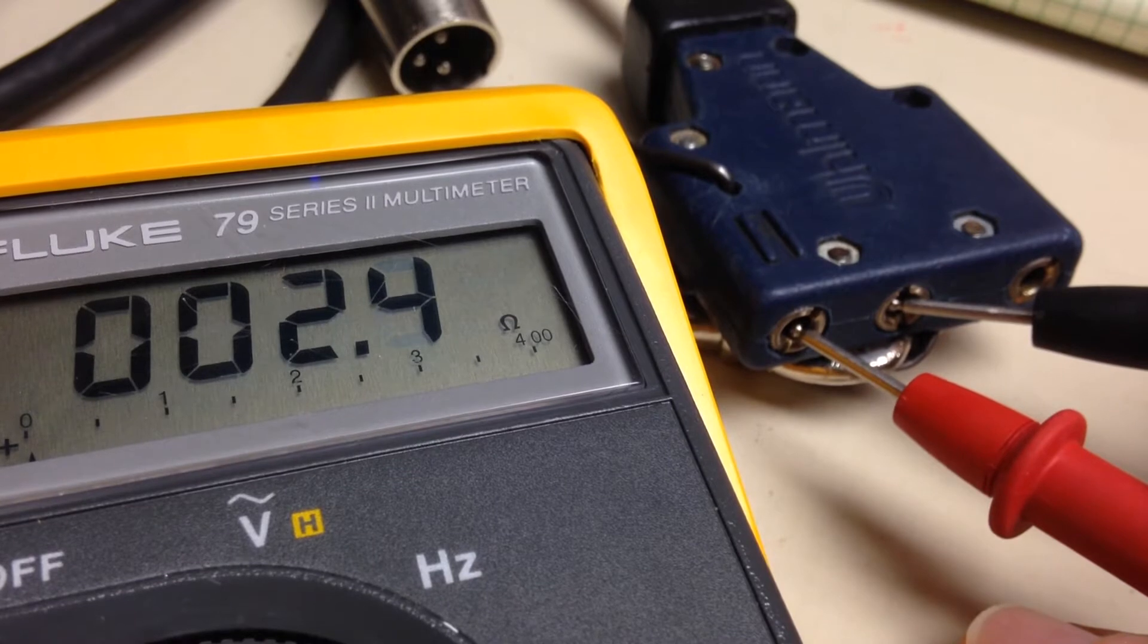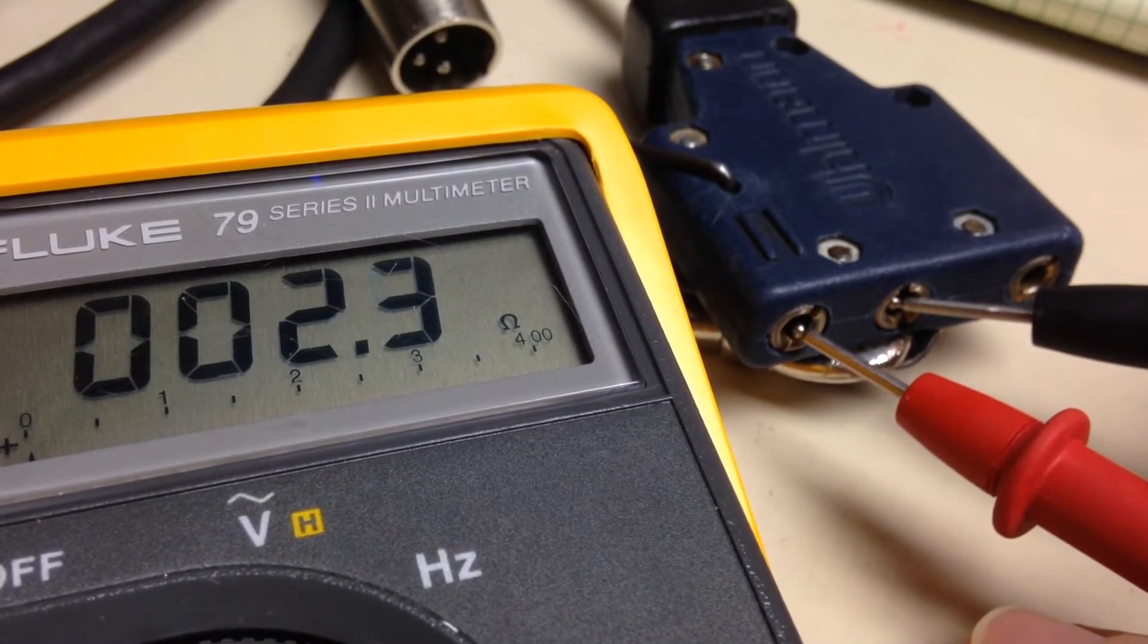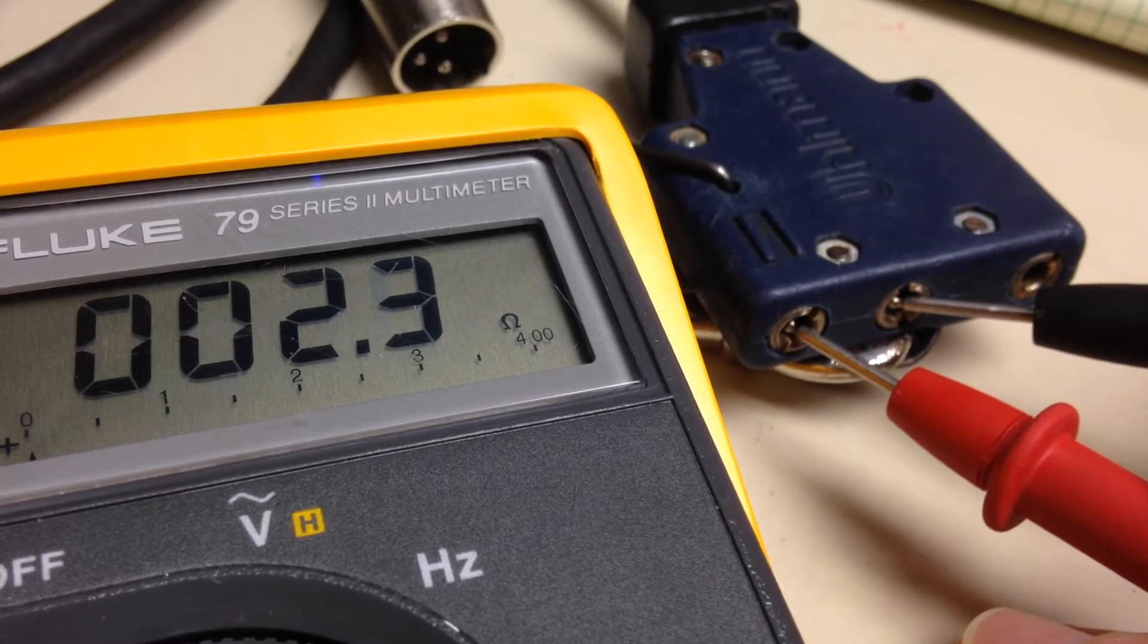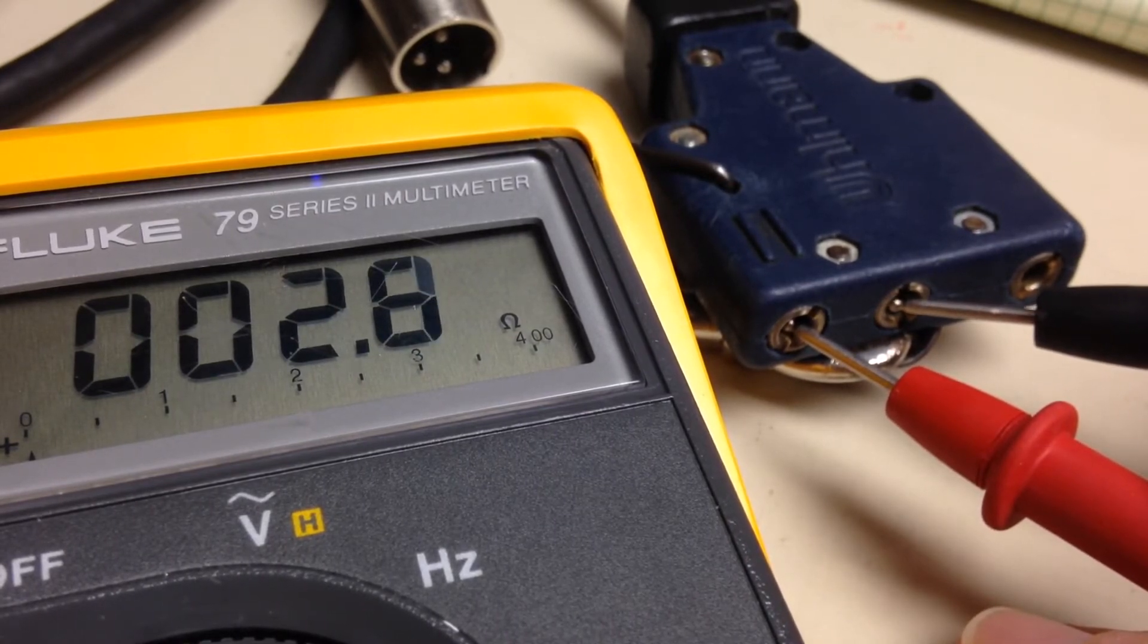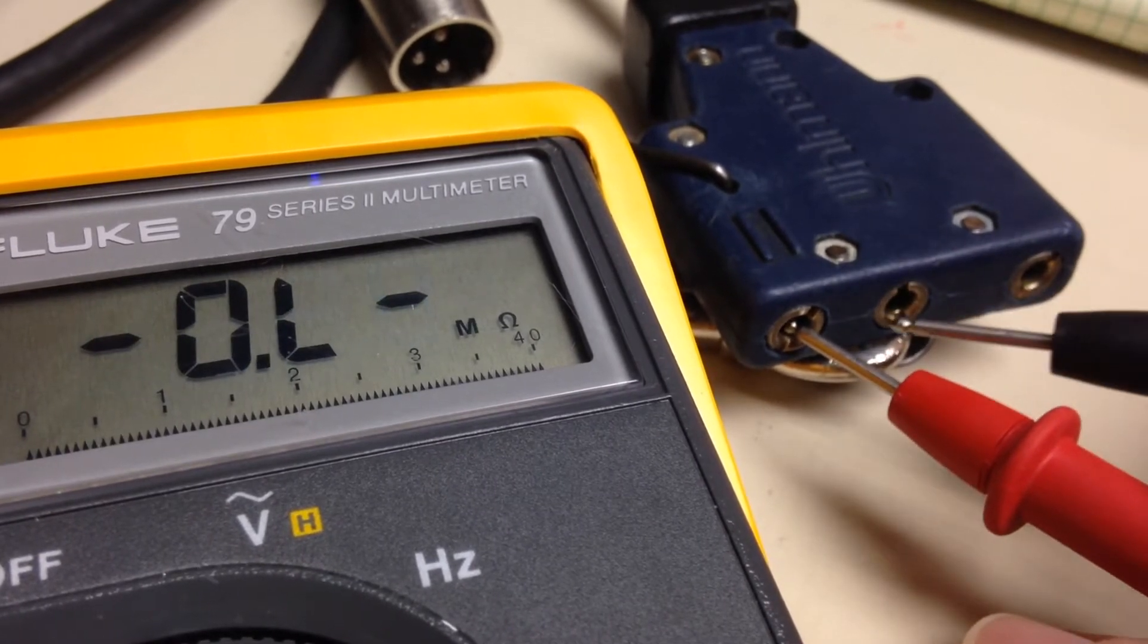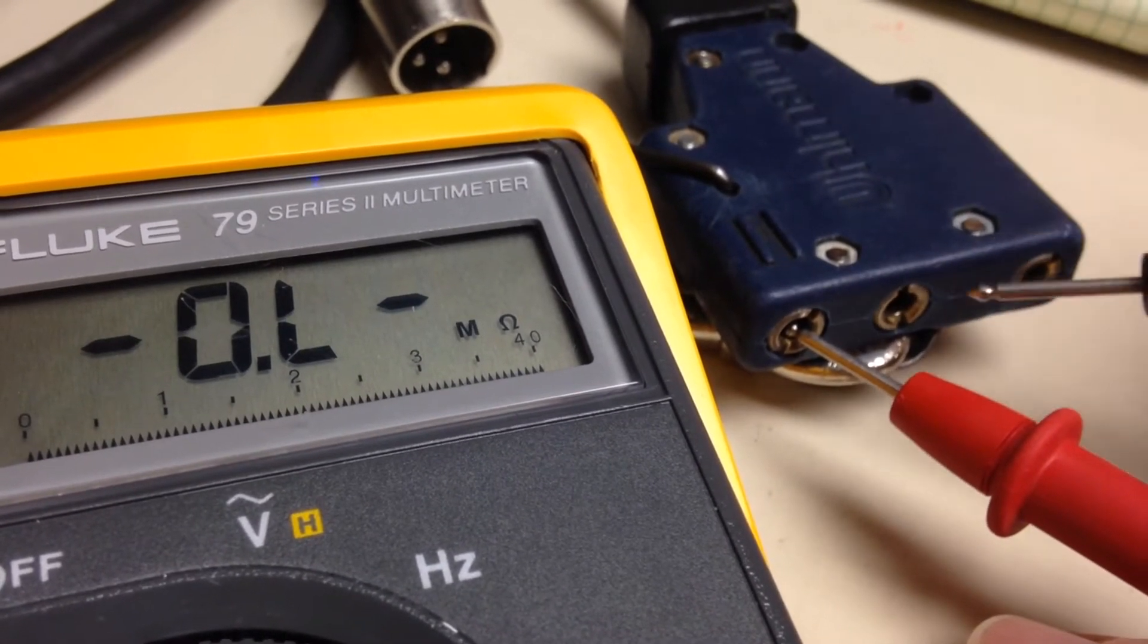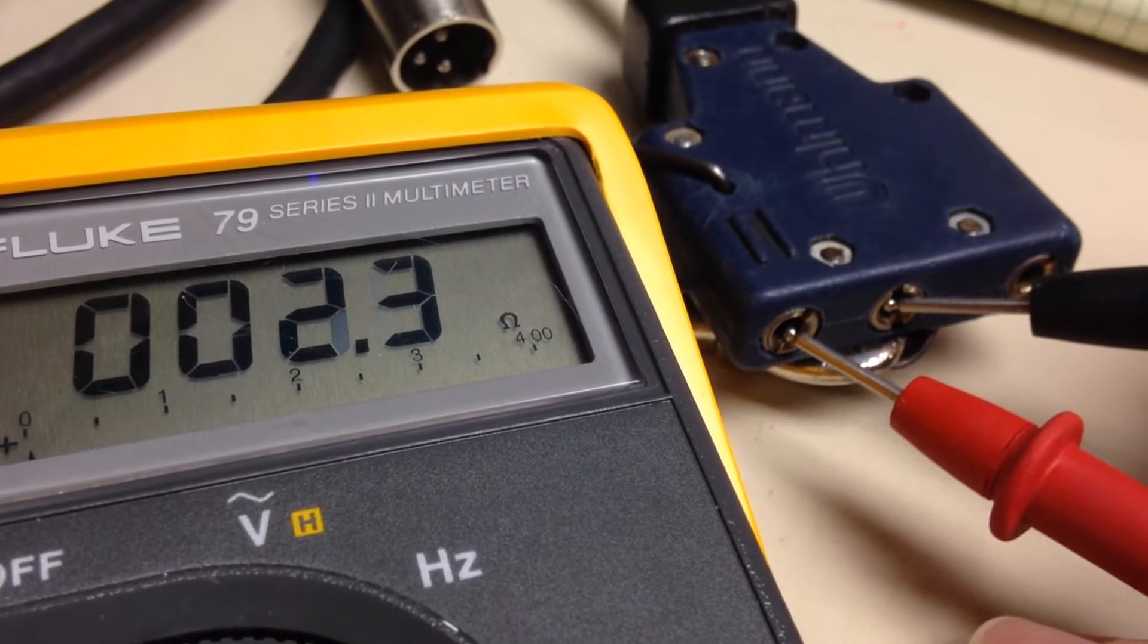One way you could diagnose this is you could put some current through the line and figure out where it's getting hot. You could end up possibly burning your short out and it could show up later. So we're going to use a more scientific method of diagnosing this. We could run current through the line, not enough to heat it up, and maybe look at the potential drop and use that to try to figure out approximately linearly where the short is down the line. But there's a better way to do it using the TDR method.